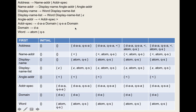Now we have all the information we need — the grammar, the first sets, and the follow sets — to write a parser. We'll take it step by step. We define functions as parse_nonterminal. In this case, we write the function parse_address, which is responsible for parsing the address. The first thing we do is get a token and look at what it is to decide which of the two rules applies.